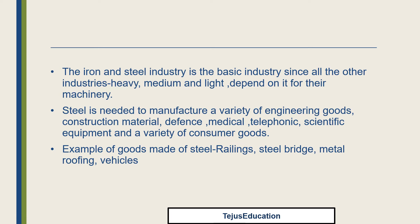Steel plants in India include Salem, Bhadravati, Vijayanagar, Visakhapatnam, Bhilai, Rourkela, Jamshedpur, Bokaro, Burnpur, and Durgapur. The largest steel plant in India is Bhilai; the first steel plant is Rourkela. The city famous for its steel plant in Jharkhand is Bokaro.